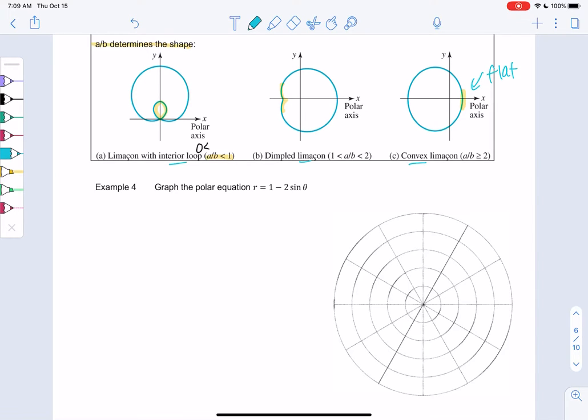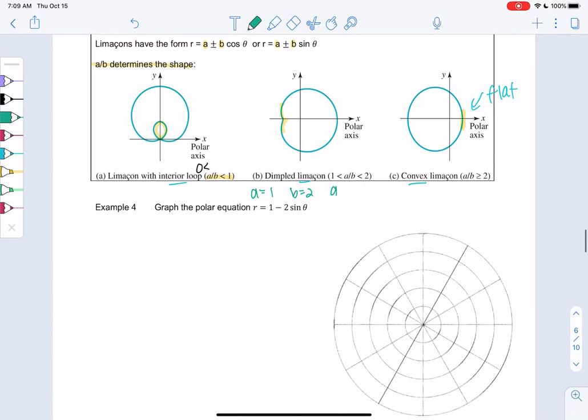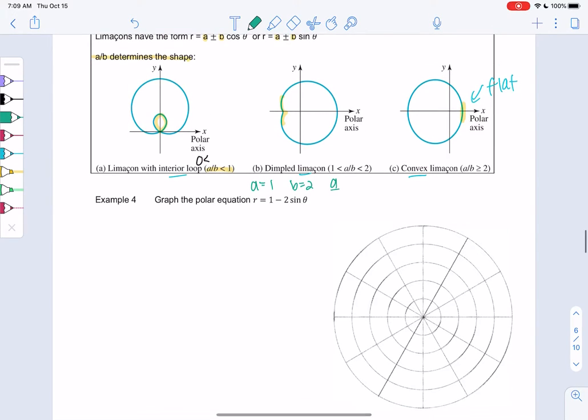Graph the polar equation r equals 1 minus 2 sine theta. So my A is 1 and my B is 2. So A over B is 1 half. So we're not using the negative sign. We're only looking at the actual numbers. So A over B is 1 half, which is less than 1. So we have a limaçon with an interior loop.